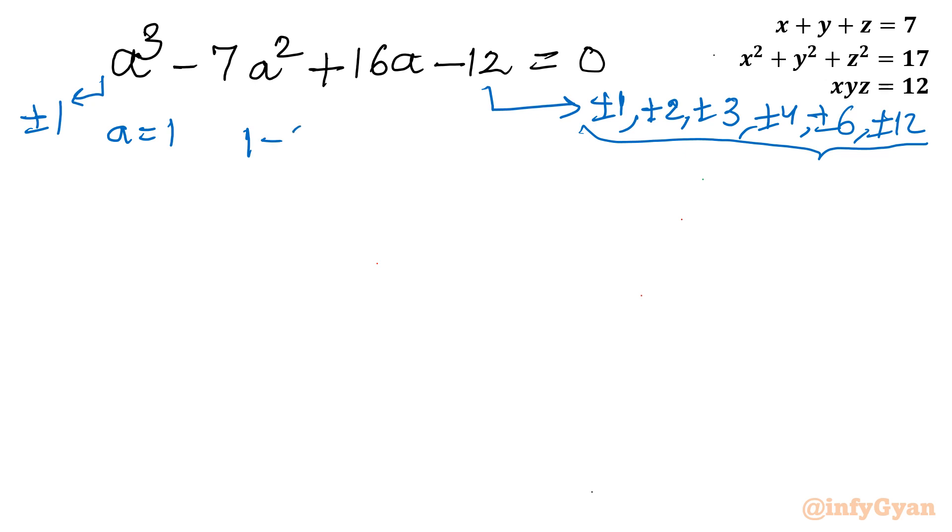1 minus 7 plus 16 minus 12. 17 minus 19, no it is not equal to 0. A equal to negative 1: minus 1 minus 7 minus 16 minus 12, all numbers are negative, cannot be possible 0.